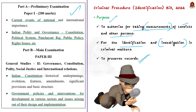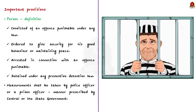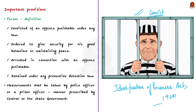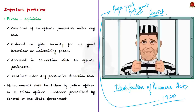Currently, if a person is convicted, their measurements are taken based on the Identification of Prisoners Act of 1920. That act authorized the taking of measurements and photographs of convicts and others. As per the 1920 Act, measurements included finger impressions — that is fingerprints — and footprint impressions. Now the 2022 Bill also authorizes taking measurements of convicts and other persons. So if this bill becomes an act, it will repeal the 1920 Identification of Prisoners Act.